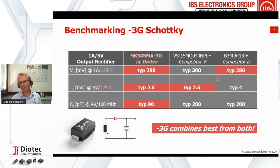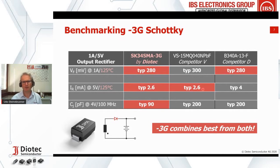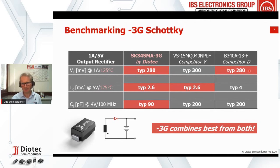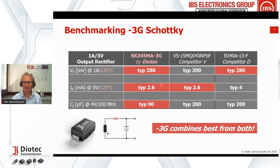A competitor part from Vishay had a target of low hot leakage current: 2.6 mA at 5V, 125°C. Diodes Inc. targeted low forward voltage drop: 280 mV at 1A, 125°C. Our third generation Schottky technology allows combining both — our part has the low leakage current of Vishay and the low forward voltage drop of Diodes Inc., combining the best of both. On top of that, our part offers the lowest junction capacitance, important for high-frequency operation.